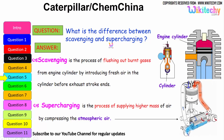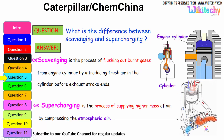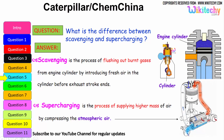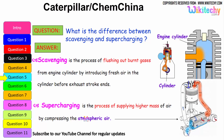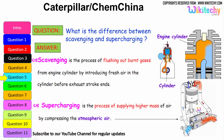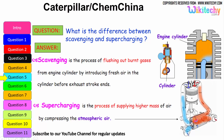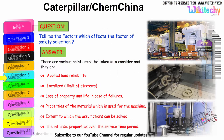What is the difference between scavenging and supercharging? Scavenging is the process of flushing out the burnt gases from the engine cylinder by introducing fresh air in the cylinder before the exhaust stroke ends. Supercharging is the process of supplying higher masses of air by compressing the atmospheric air — you are supplying high-pressure air injected into the cylinder.